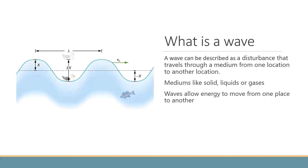A wave can be described as a disturbance that travels through a medium — from one location to another location. Mediums can be solid, liquid, or gas. A wave is a way to allow energy to move from one place to another.